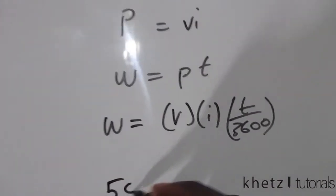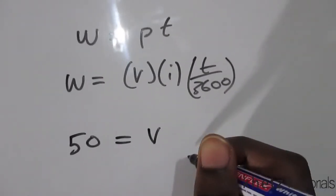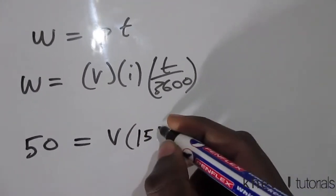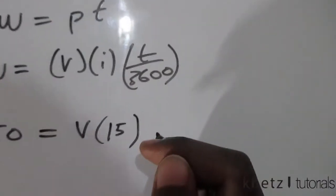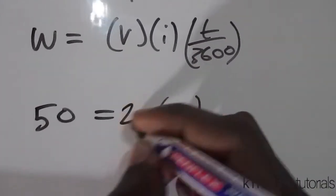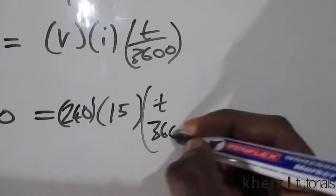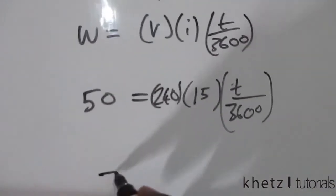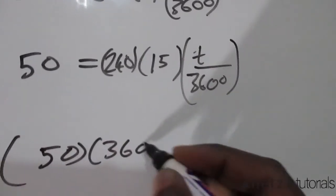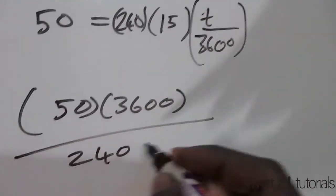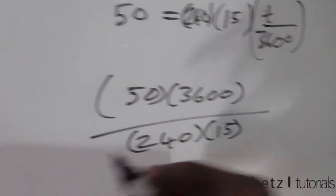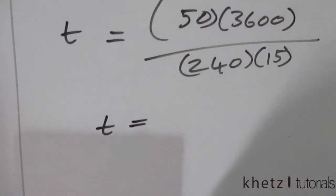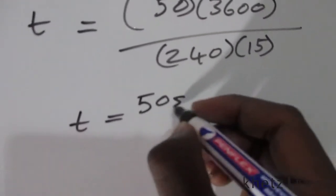So 50 equals V. Substitute I, which is given. V is also given as 240 and you want to find t. So we simply multiply through and have 50 multiplied by 3600 divided by 240 multiplied by 15. So t equals that. And t equals 50 seconds.